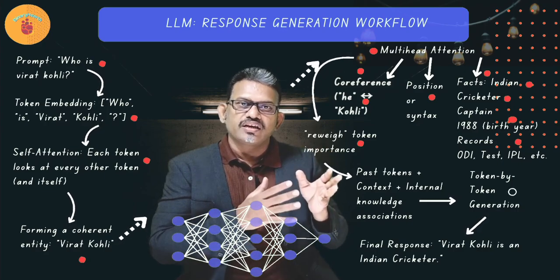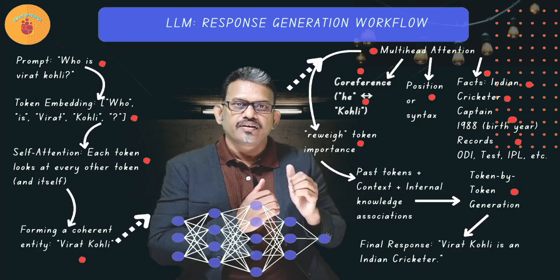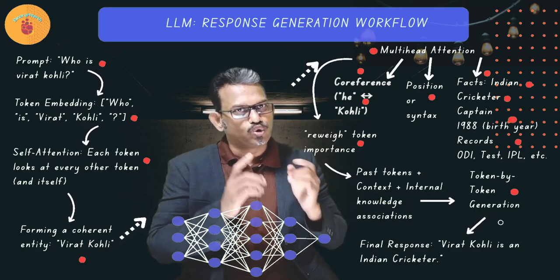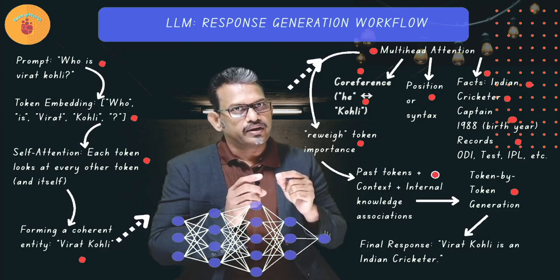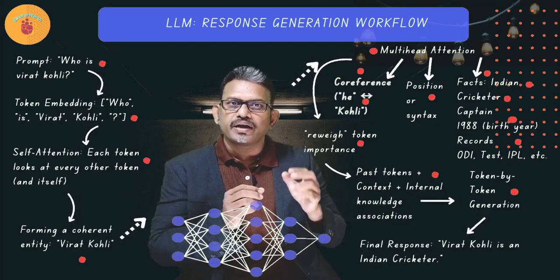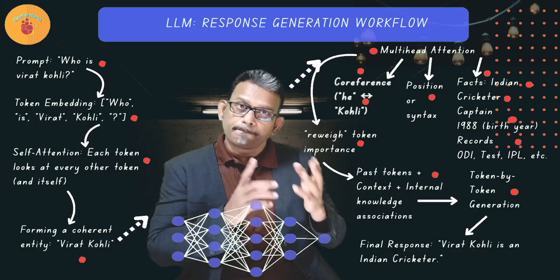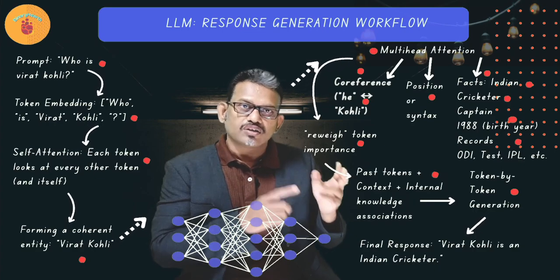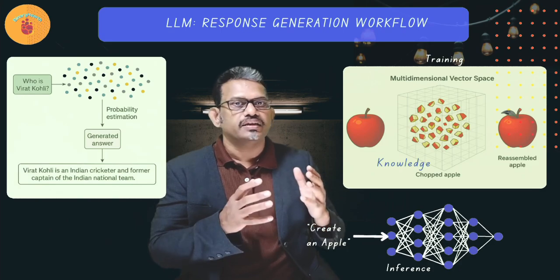Final step is token by token generation. When the model generates a response, Virat Kohli is an Indian cricketer, at each step, the attention mechanism dynamically looks back at given prompt. Internally, it uses the knowledge encoded in its parameters. It predicts the most likely next token word based on past tokens, context, plus internal knowledge associations. And the final response is, Virat Kohli is an Indian cricketer.